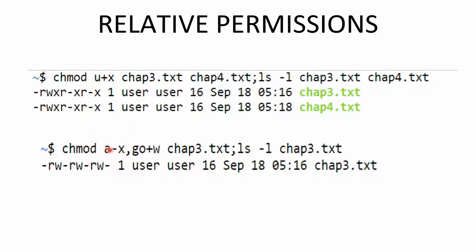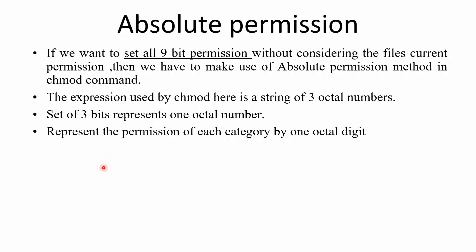Now we want to remove the execute permission for all users. You need not mention user, group, and others separately — if you mention a it considers all users. We remove the execute permission and for group and others we grant the write permission. Combining this with another command to see the file permission information, you can see the execute permission which was earlier added has been removed, and write permission is now given for both group and others.